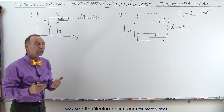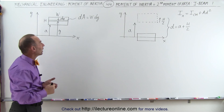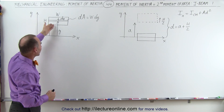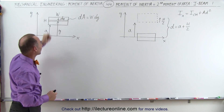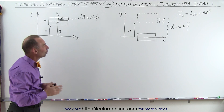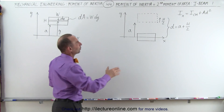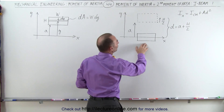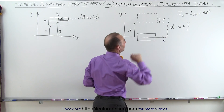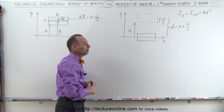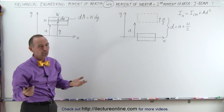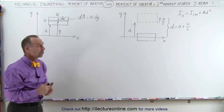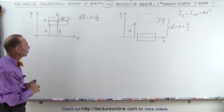Now we're going to do it in two different ways. We're going to do it traditionally, simply by integrating over that portion, or we can also do it by using the parallel axis theorem. We'll do it both ways, and you can see that we'll get the same result.